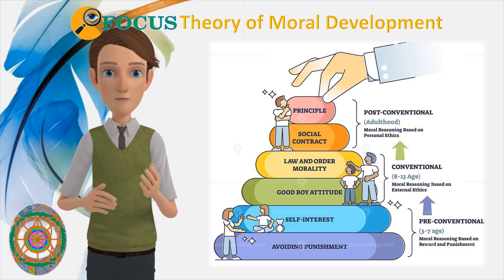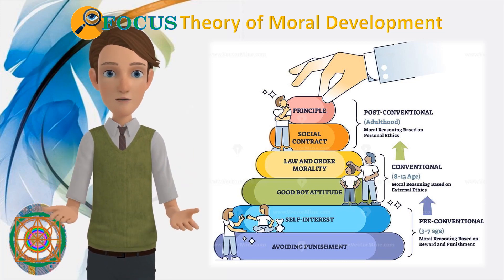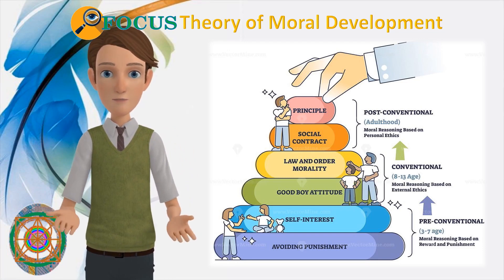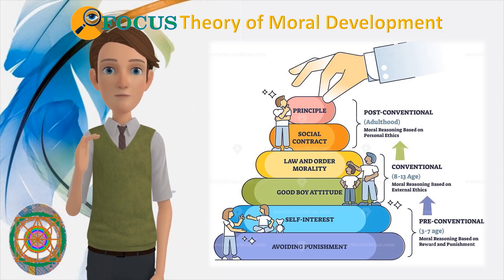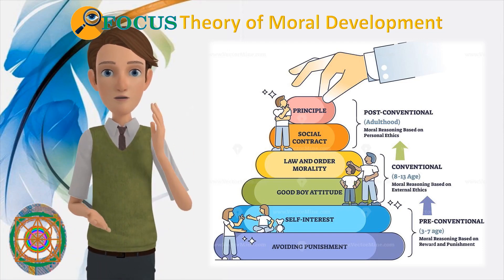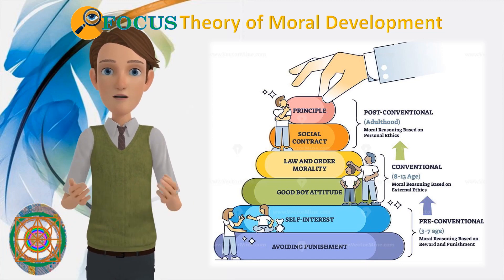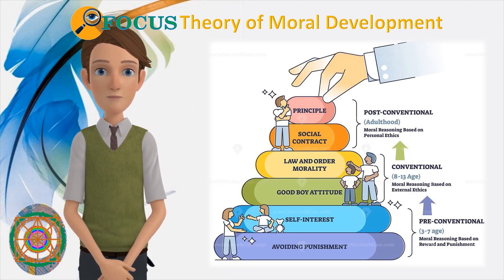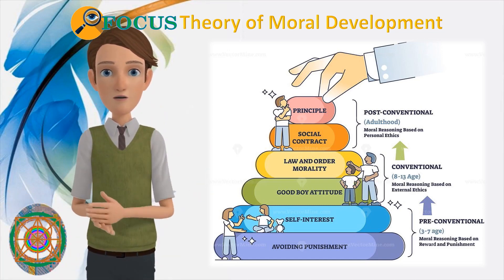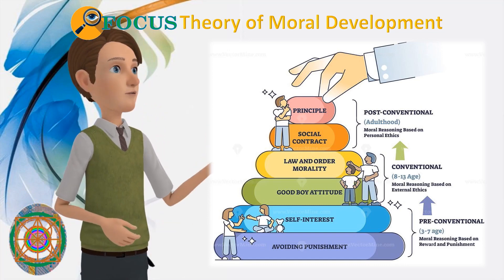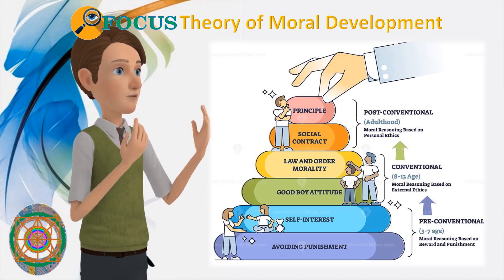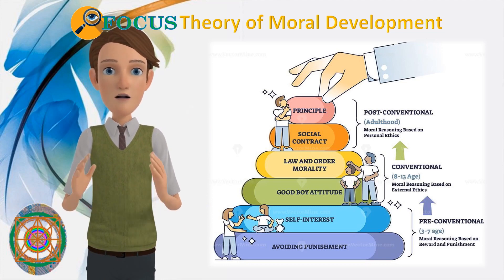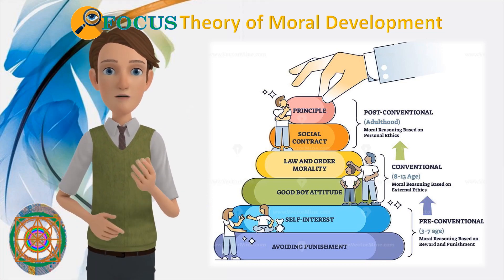To sum up, Kohlberg's stages of moral development provide a thorough framework for comprehending how people develop their moral reasoning from infancy to maturity. Pre-conventional, conventional, and post-conventional are the three primary levels and six unique stages that Kohlberg uses to illustrate the complex growth of moral reasoning, from concepts of obedience and self-interest to justice and universal ethics.